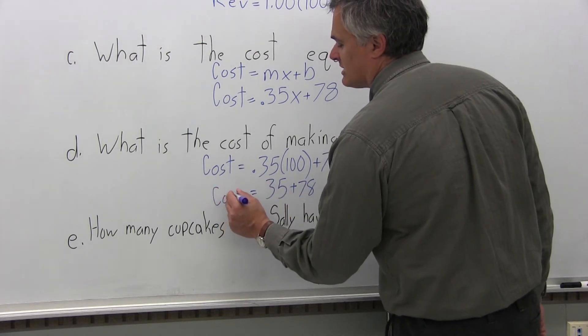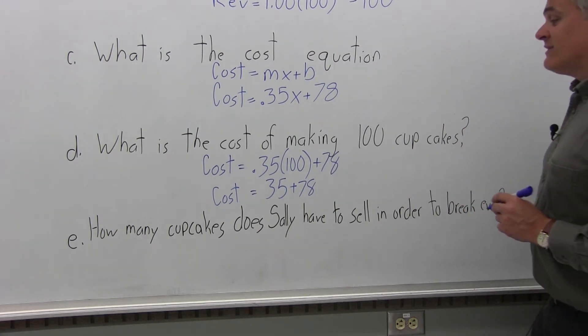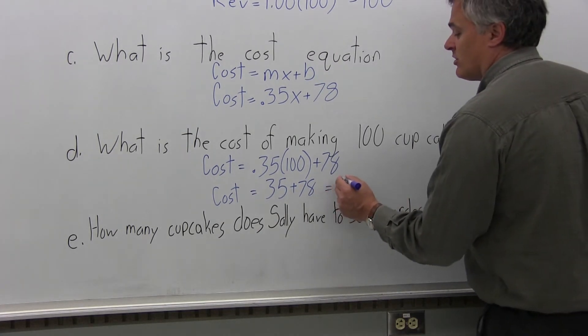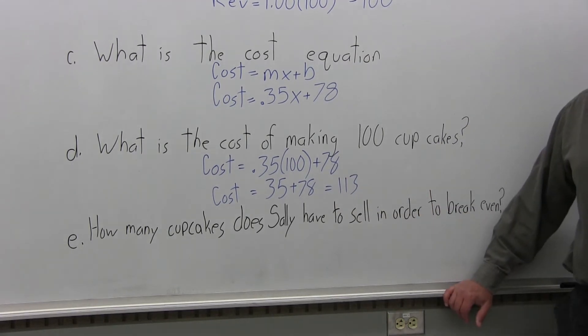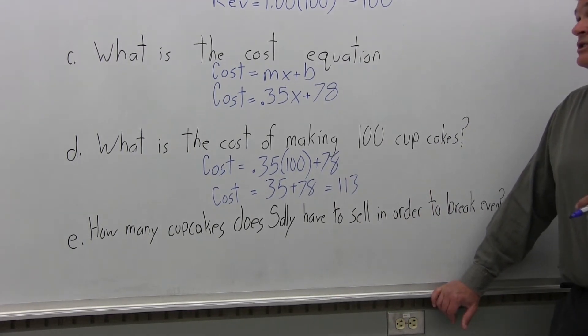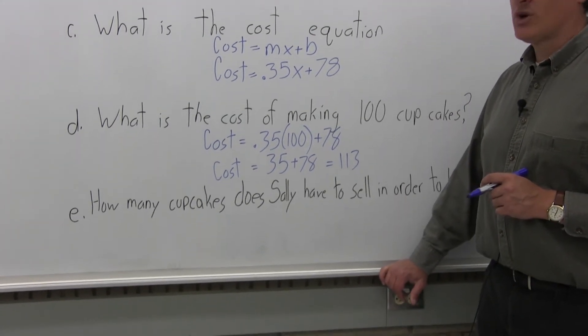And now .35 times 100 is 35 and I'll add 78 to that. And I'll put on the left cost equals 35 plus 78, which comes out to 113. So it's going to cost Sally $113 to make 100 cupcakes.